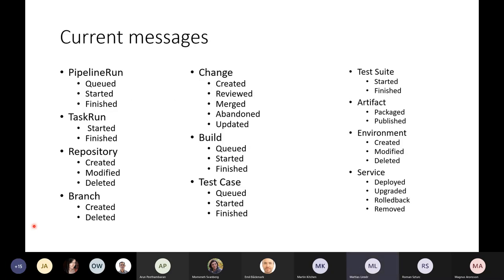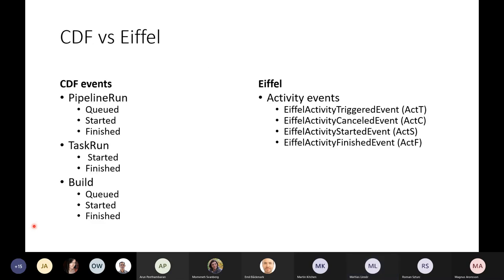These are the current suggested events and I will dig into them a little bit more as we go along. Starting with activity events: in Eiffel we have activity triggered, canceled, finished, and started. The current thinking here is more on concrete events rather than those generic ones — so there are pipelines, tasks, and builds with created, started, and finished. But we don't have any canceled events here.